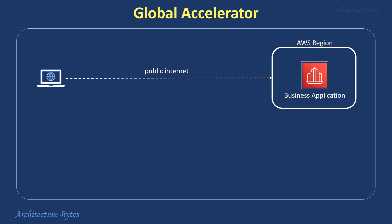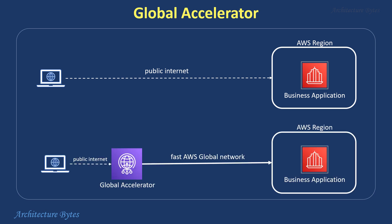However, if an end user's request can travel through the fast AWS global network, it can reach the application's endpoint in AWS faster, thereby delivering better performance. AWS Global Accelerator allows you to do exactly that. Therefore, it is a service to improve availability and performance of internet applications.